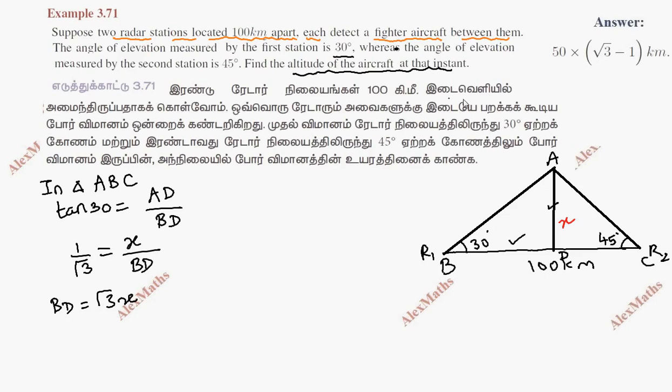In triangle ADC: tan 45 equals AD by DC. 1 equals x by DC, so DC equals x.